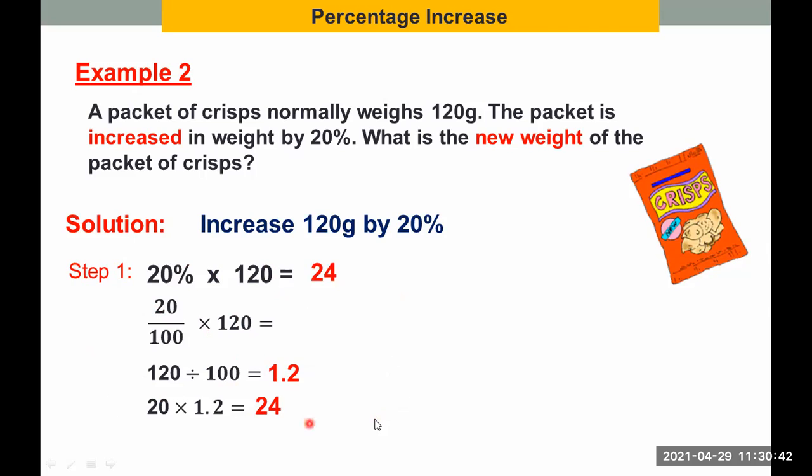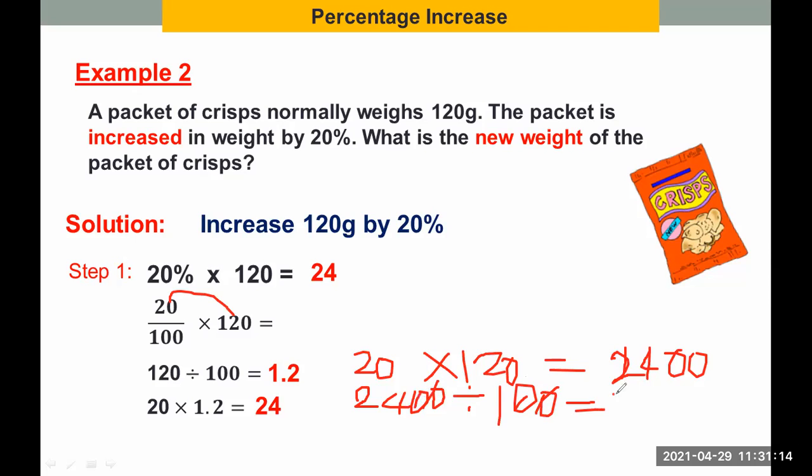By the way, you can also do the same thing as what I gave you last time. You can start by multiplying 20 times 120. This will give you 2,400. Then 2,400, you divide this by 100. So we canceled out the zeros. So that means we're going to get 24. So that's why it is 24. Got it?